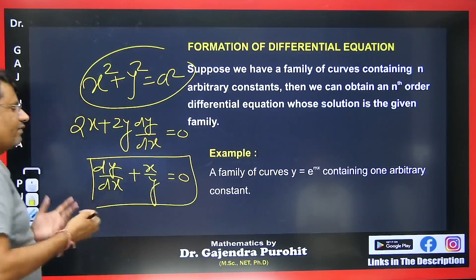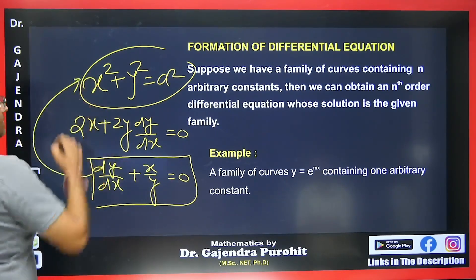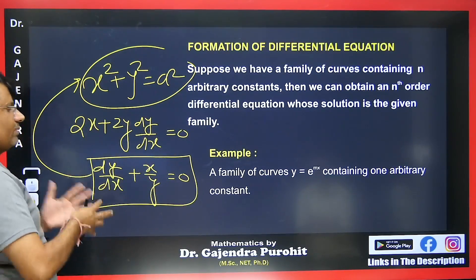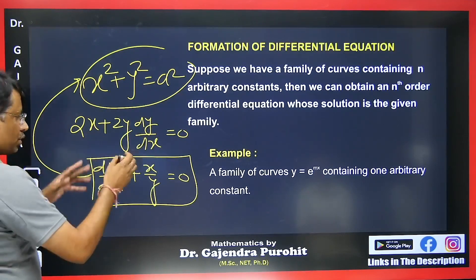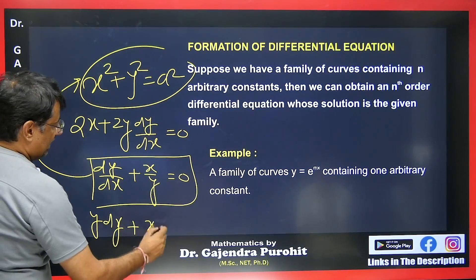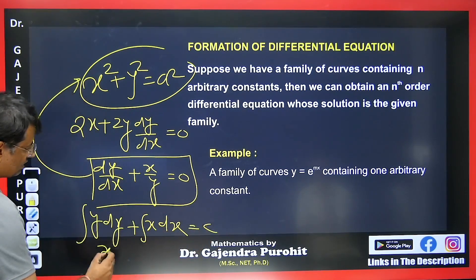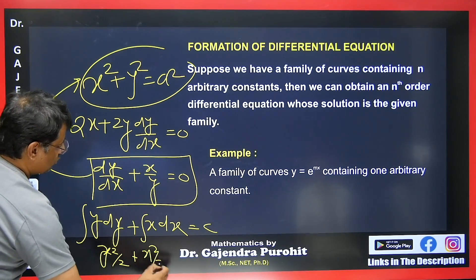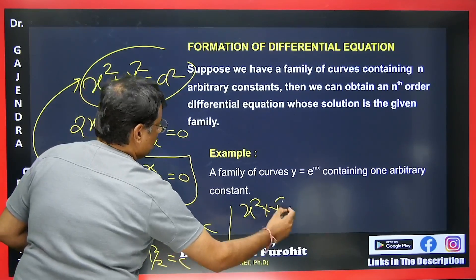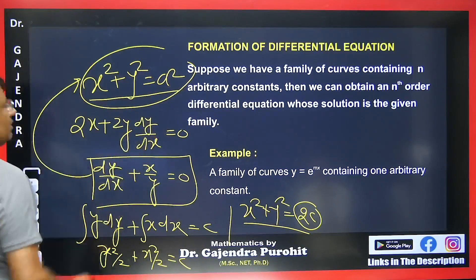You might ask: how do we know this is the differential equation? When you solve this again using the variable separable method, you will get the original answer. On separating variables and integrating, we get y²/2 = −x²/2 + c, which gives x² + y² = 2c. We can assume 2c = a², recovering the same equation.